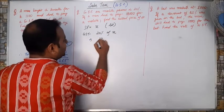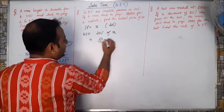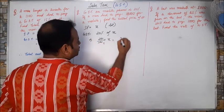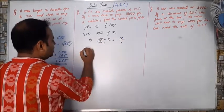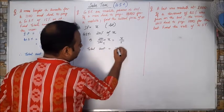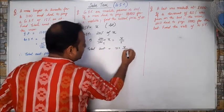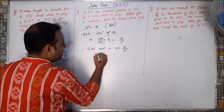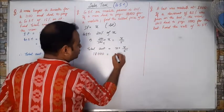That is, it will be 20 by 100 into X. That is equals to X by 5. So therefore, total amount. Total amount will be X plus X by 5.